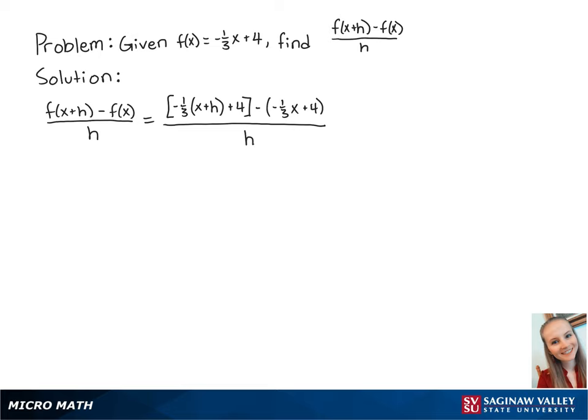If we simplify the top, we get negative 1 third x minus 1 third h plus 4 plus 1 third x minus 4 all over h.